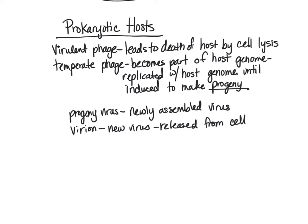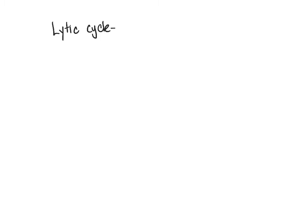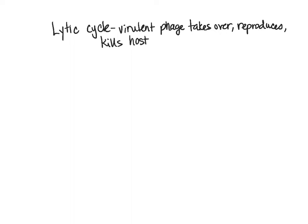Now let's talk about the two different life cycles. The first is the lytic cycle, which involves a virulent phage. A virulent phage takes over a cell, reproduces, and then kills the host. The first step is attachment.